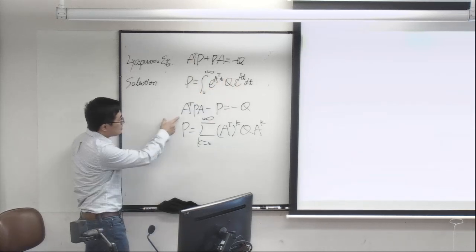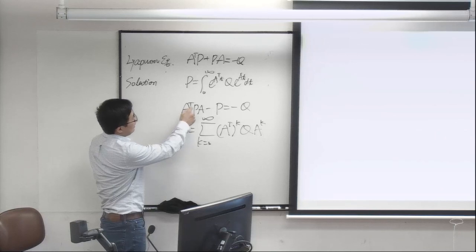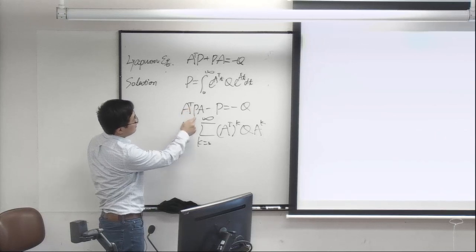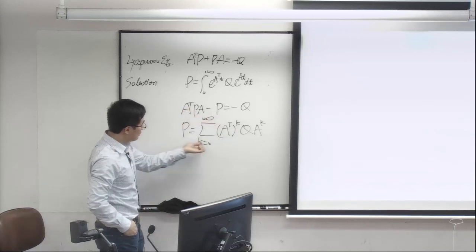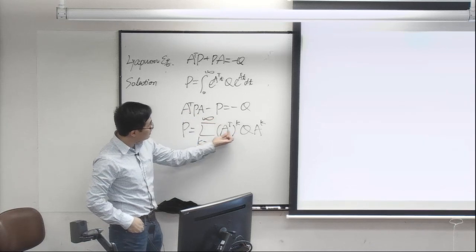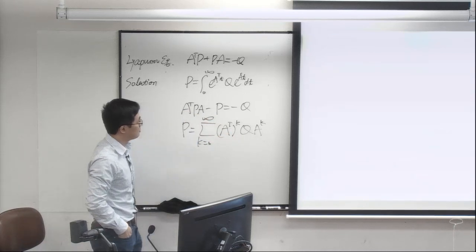In the discrete-time case, it's the same structure: A transpose P A minus P equals negative Q. The solution is the summation of A transpose K times Q times A K.